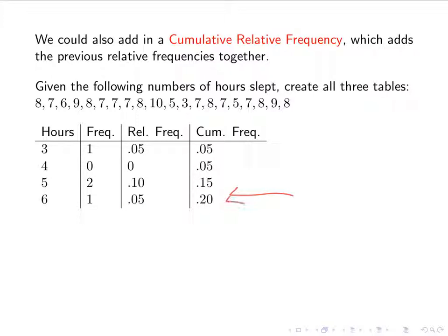The cumulative frequency tells you how many people slept at most six hours. So from zero to six, 20% of the sample slept at most six hours. The next value is 7 hours — there were seven people, giving a relative frequency of 0.35, so the cumulative frequency is now 0.55. There were six people who slept 8 hours, giving a relative frequency of 0.30, making the cumulative frequency 0.85.